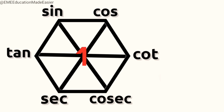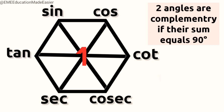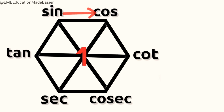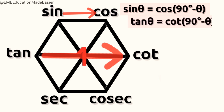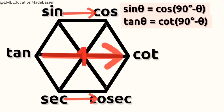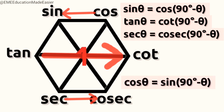Let's draw the super hexagon once again. Do you remember complementary angles? Two angles are complementary if their sum equals 90 degrees. Trigonometric functions have a special relation with complementary angles. This arrow tells us about sin and cos: sin of theta equals cos of 90 degrees minus theta. Similarly, this arrow tells us that tan of theta equals cot of 90 degrees minus theta. And if the arrow is drawn the other way, cos of theta equals sin of 90 degrees minus theta. A horizontal arrow tells us that one function of an angle equals the other function of its complementary angle.